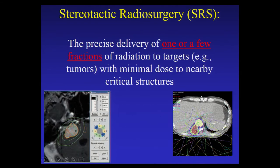Here's an example on the left where an intracranial target is being treated with a gamma knife — dose is delivered very precisely to the target and rapidly falls off, protecting nearby critical structures. On the right is an example of stereotactic radiosurgery delivered to a target in the spine, which is within millimeters of the spinal cord. We can now shape and bend the radiation around the spinal canal and deliver an ablative dose of radiation to a target within millimeters.